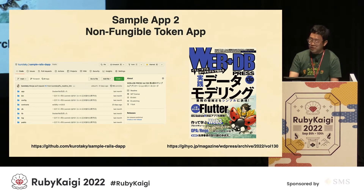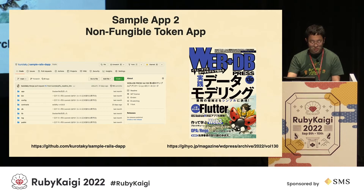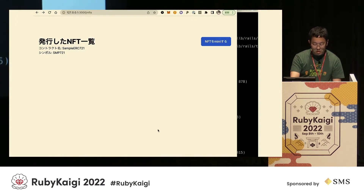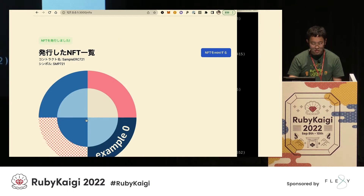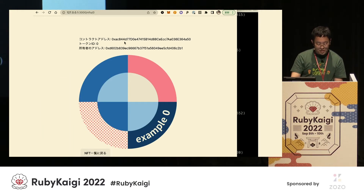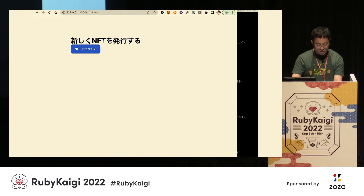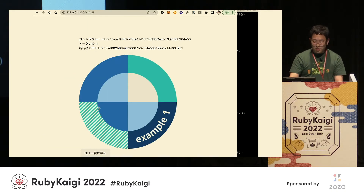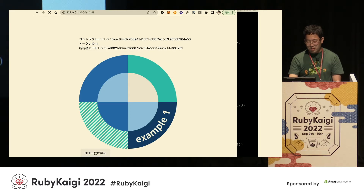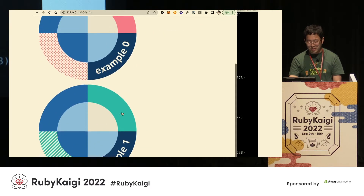The next sample application — there is also a sample application for NFT, non-fungible token. Here is a video of the application in action. You can try out applications that publish non-fungible tokens like this. Please see the Solidity code and Ruby code on GitHub. This is the NFT show page and NFT index page.